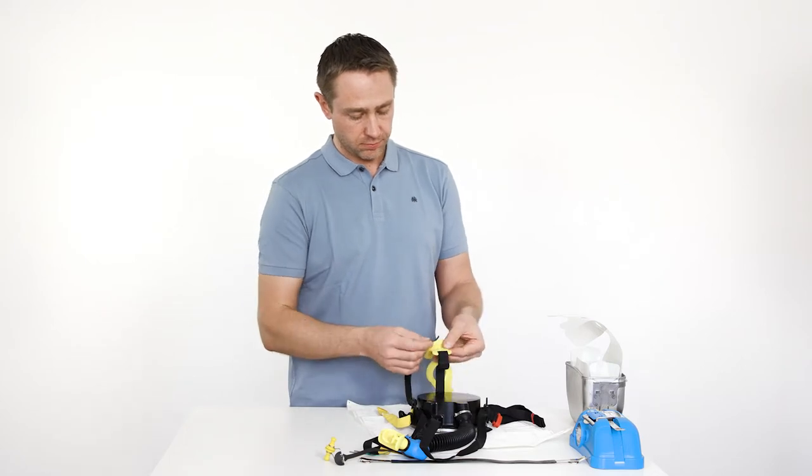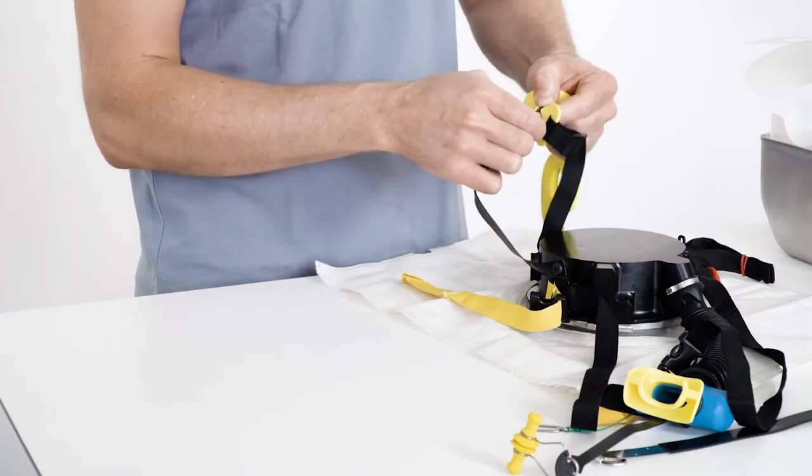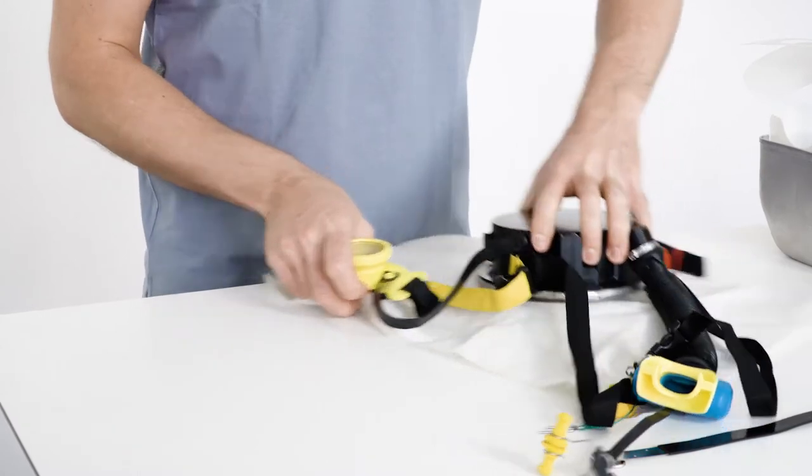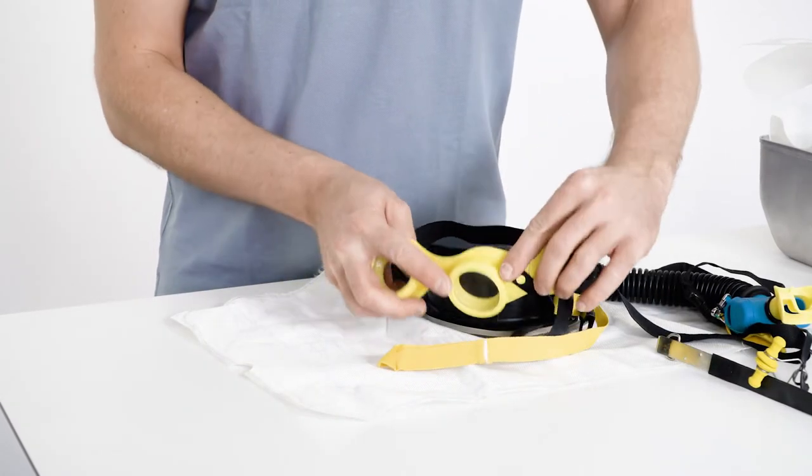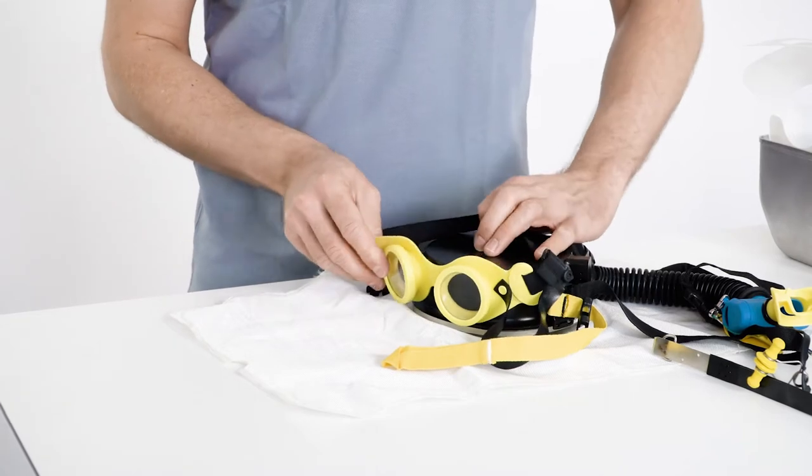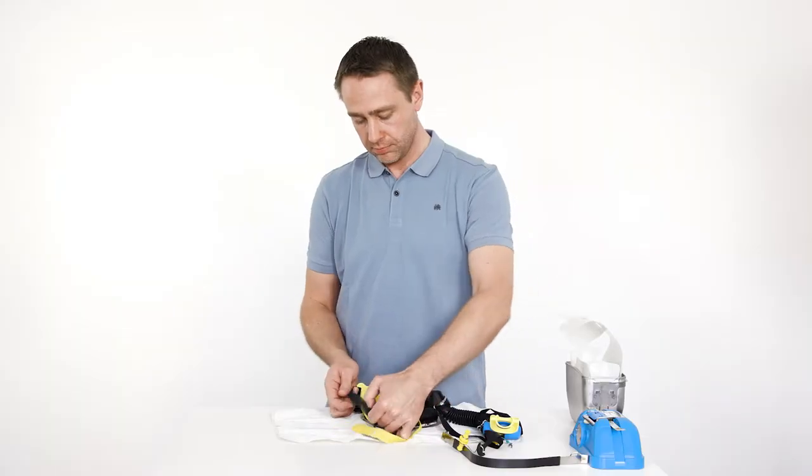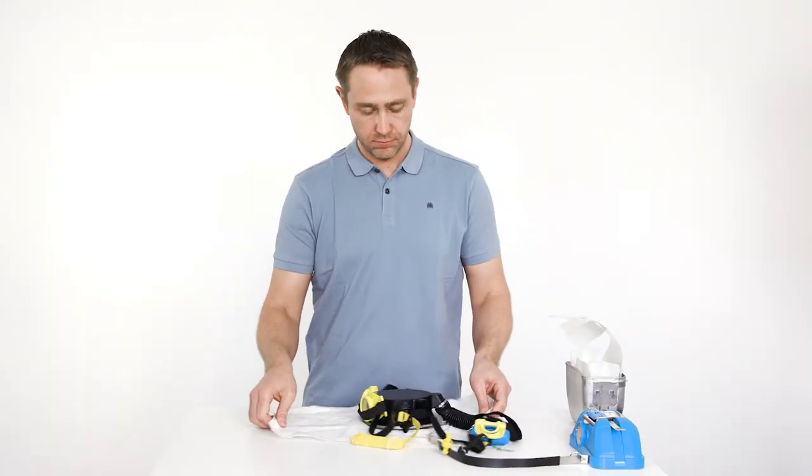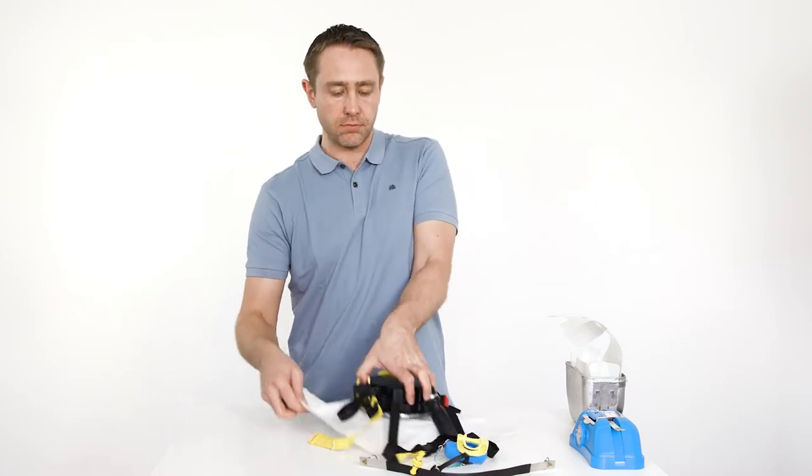Attach the protective goggles to the button loop and the button loop to the functional unit. Fold the breathing bag on top of the functional unit.